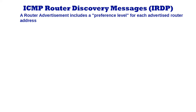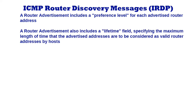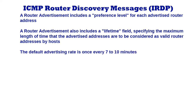A network administrator can configure router address preference levels to encourage or discourage the use of particular routers as default routers. A router advertisement also includes a lifetime field, specifying the maximum length of time that the advertised addresses are to be considered as valid router addresses by hosts in the absence of further advertisements. This is used to ensure that hosts eventually forget about routers that fail, become unreachable, or stop acting as routers.